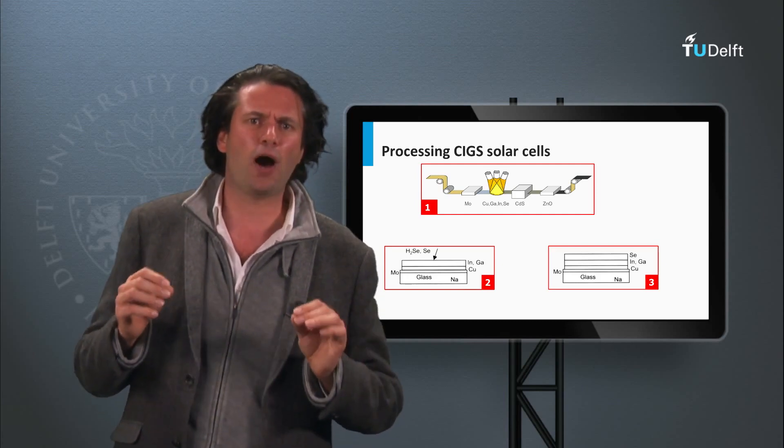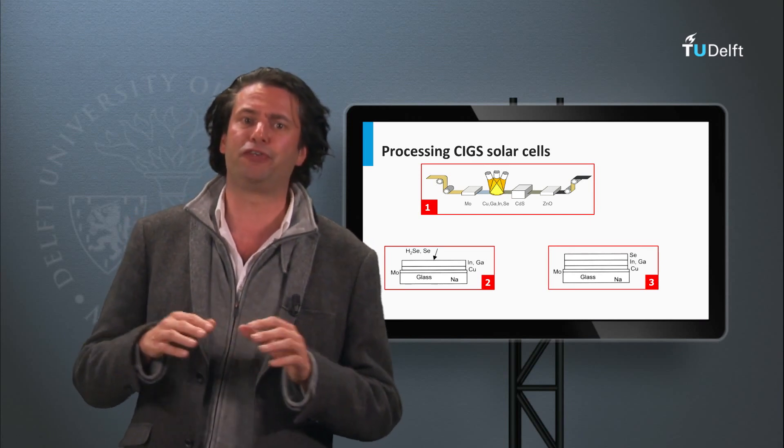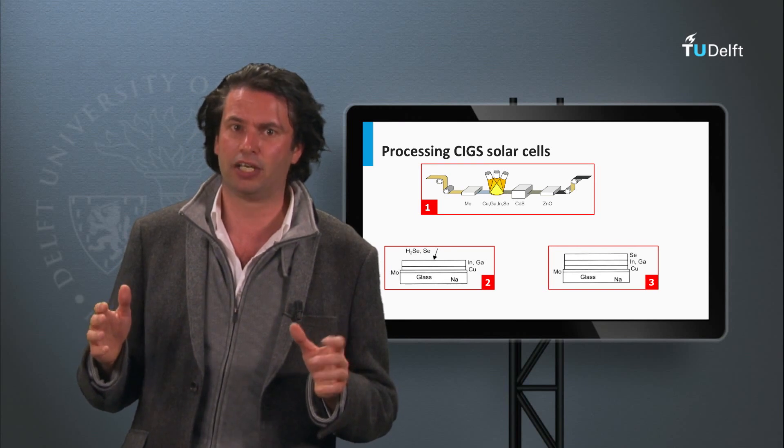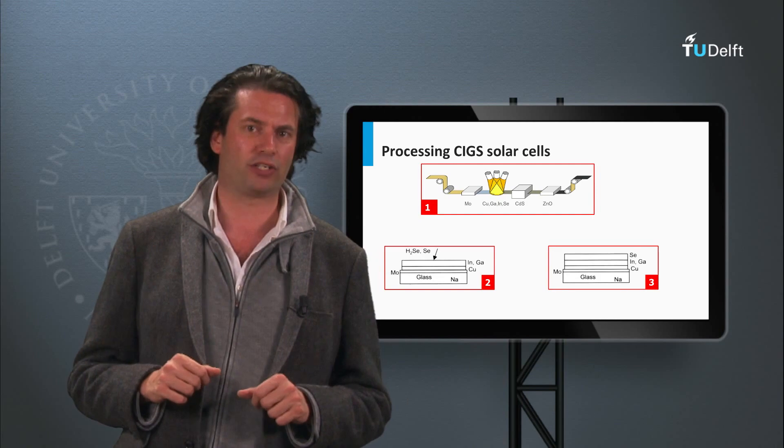Sintering is a process in which films are made out of powder. The powder is heated up to a temperature below the melting point. Atoms in the particles can diffuse across the boundaries of the particles. As a result, the particles fuse together, forming one big solid.